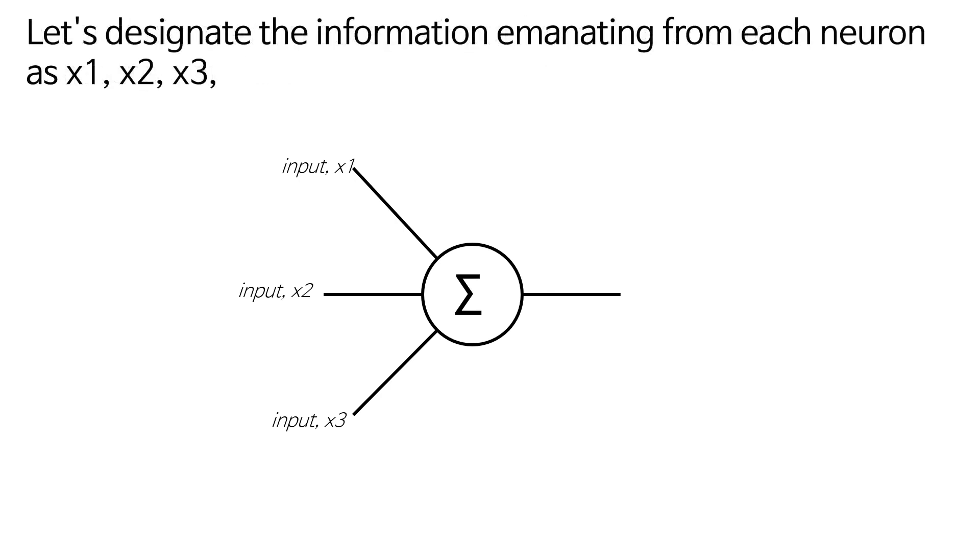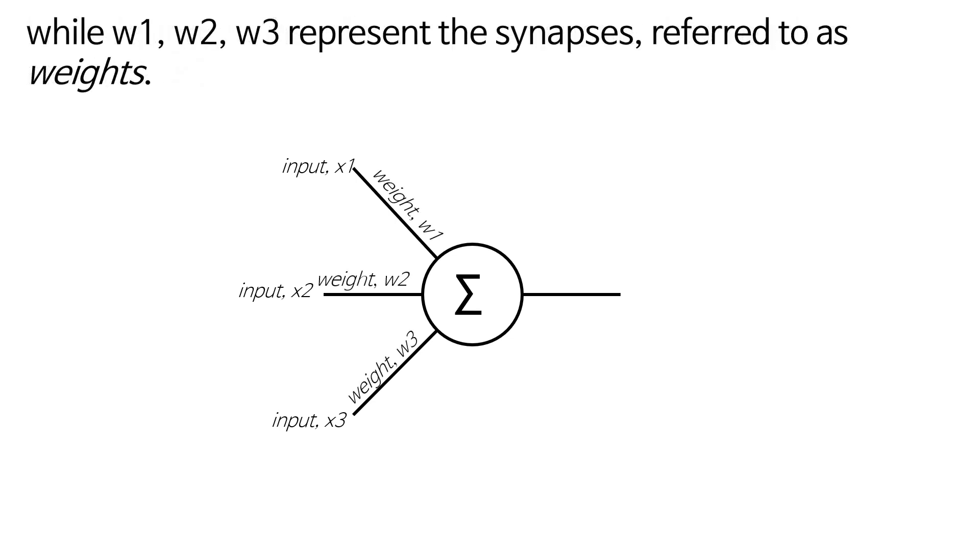Let's designate the information emanating from each neuron as x1, x2, x3, while w1, w2, w3 represent the synapses, referred to as weights.